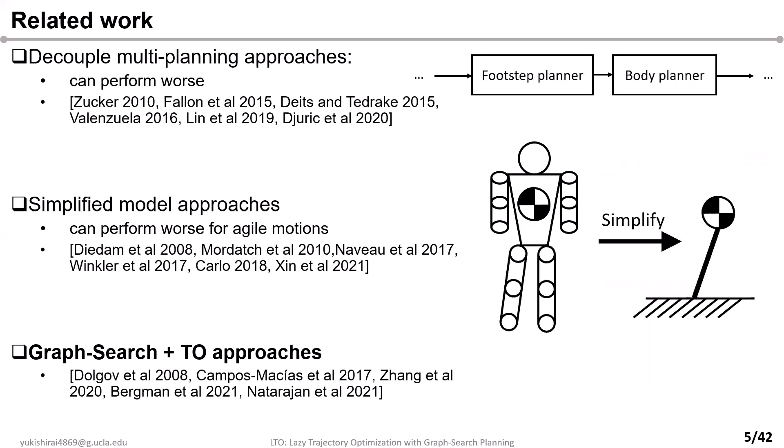Hence, we want to figure out how to quickly generate a globally feasible or even optimal trajectory with much decreased planning time. There are a number of works to solve large-scale complex trajectory optimization problems. For example, the user can decouple large-scale trajectory optimization problems into several small-scale problems so that the total planning time could be dramatically decreased. Another approach simplifies the model of the robot so that trajectory optimization can be solved efficiently.